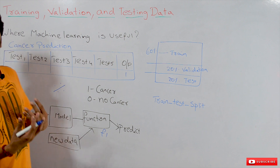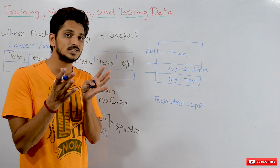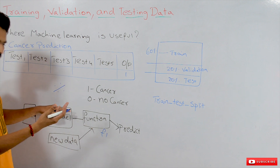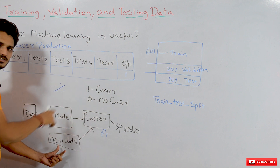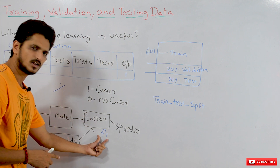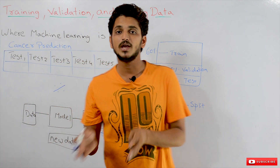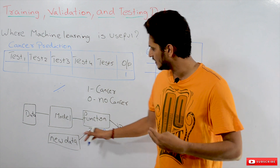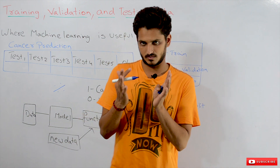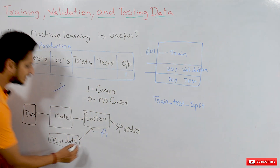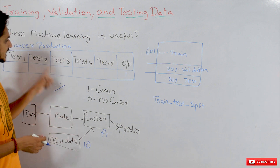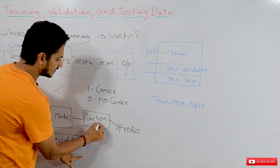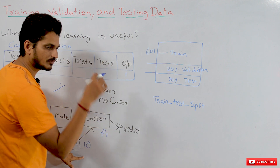Suppose a new patient comes into the hospital and has taken all five tests. Without the intervention of a doctor, the new test values — all five test values — are given to this function f1. This f1 function will predict whether the patient is having cancer or not. That's the use of machine learning. Let's say 10 different new patients come into the hospital, take all five tests, and their test values are fed into the function, which predicts whether each patient is having cancer or not.